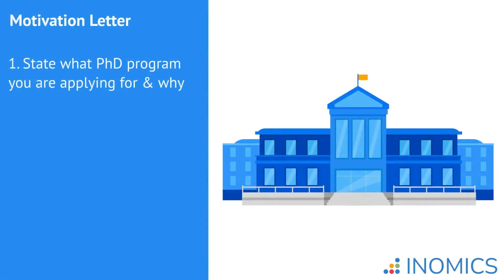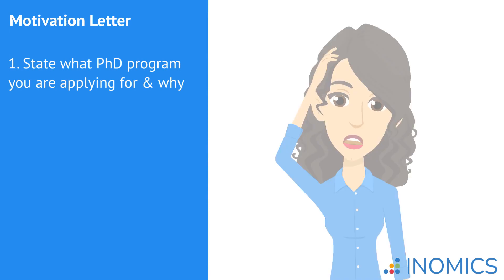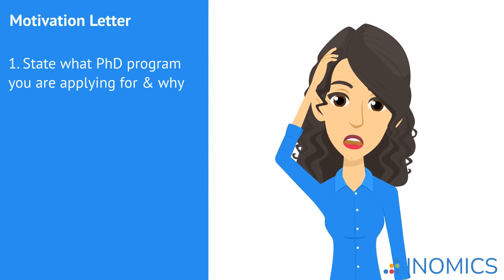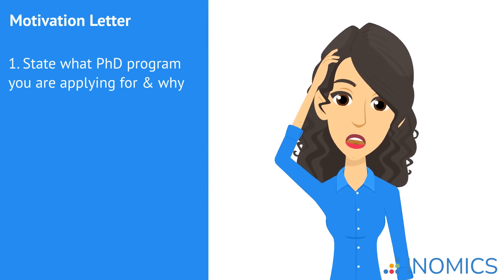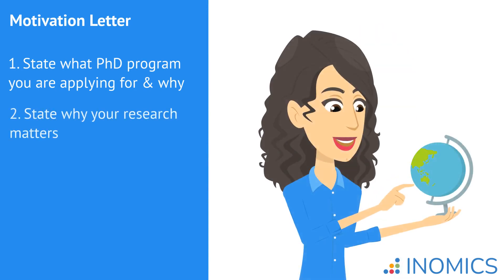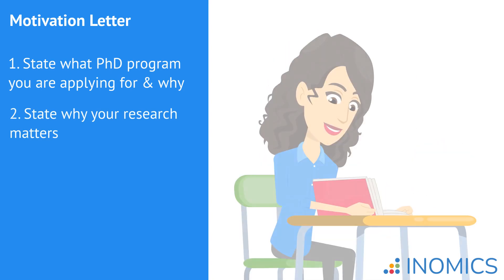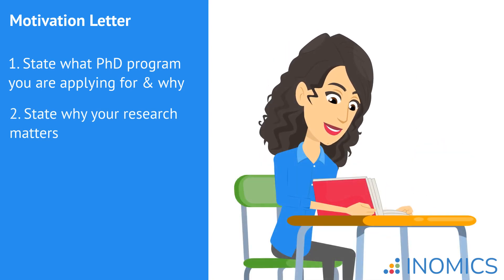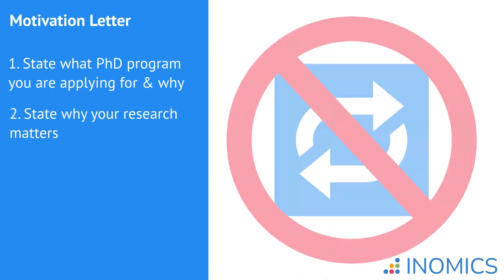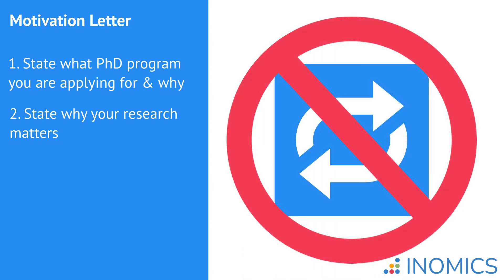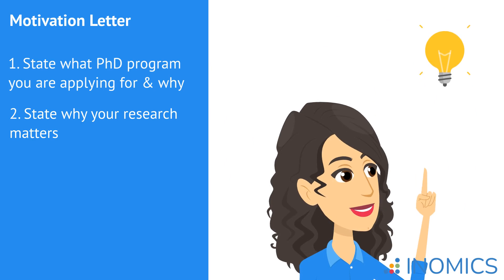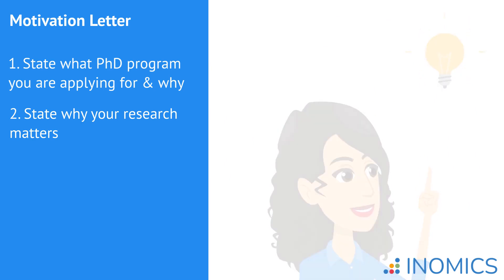First, make sure you clearly state which program you've applied for and why you want to join that program specifically. Sounds obvious, right? But you'd be surprised how many people forget this. Second, state why your research matters and what gaps in the current literature or research you'll be addressing. Make sure you don't just describe your research proposal again — they already have that. Instead, explicitly state what motivates you to do this research now.